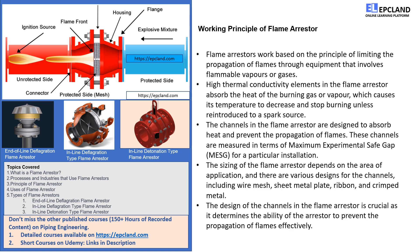Welcome to the second topic in our video lecture series on flame arrestors. In this section, we'll explore the principle behind how a flame arrester works. A flame arrester operates on the principle of absorbing the heat of burning gases or vapors, which reduces their temperature and prevents them from igniting again. This is achieved through the use of high thermal conductivity elements that are designed to absorb the heat and prevent the flame from propagating. The channels within a flame arrester are designed to absorb heat, and the size of the channels is measured in terms of maximum experimental safe gap (MESG) for a particular installation. The MESG is the largest gap through which a flame cannot propagate under test conditions.